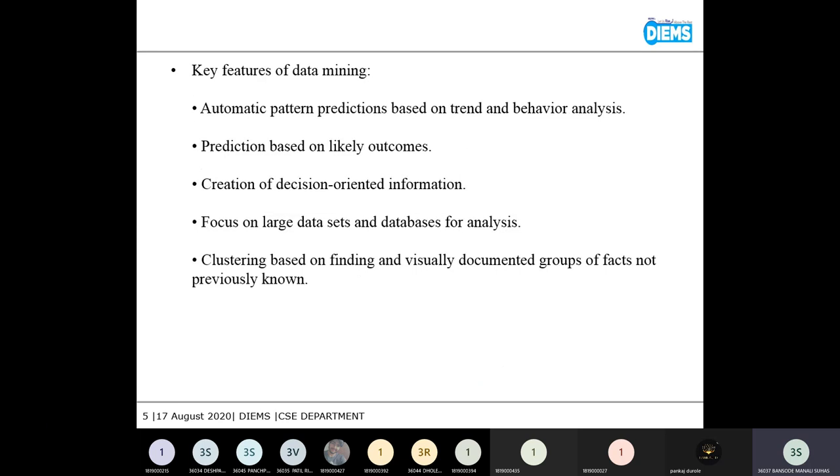So what does data mining exactly do? Data mining automatically creates patterns. It gives prediction based on likely outcomes. It also does creation of decision-oriented information. It mainly focuses on large data sets and databases for analysis. Also it does clustering based on finding and visually documented groups of facts not previously known.